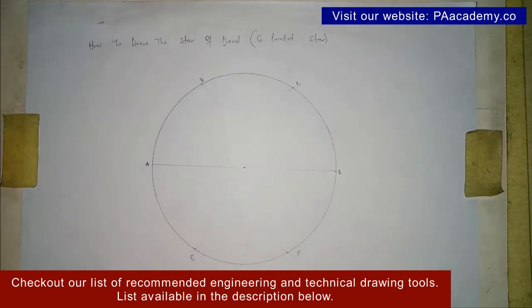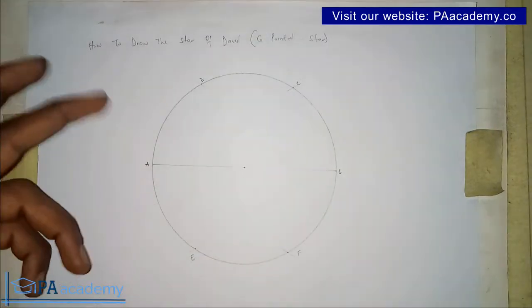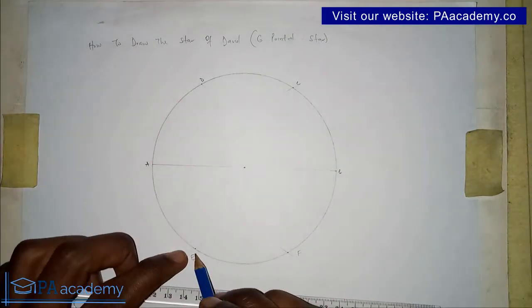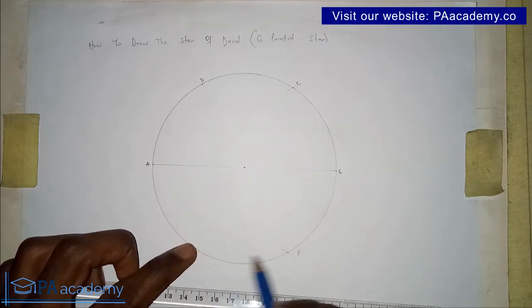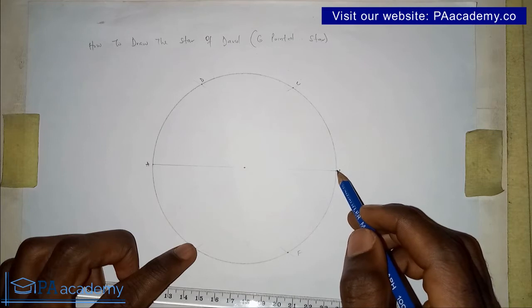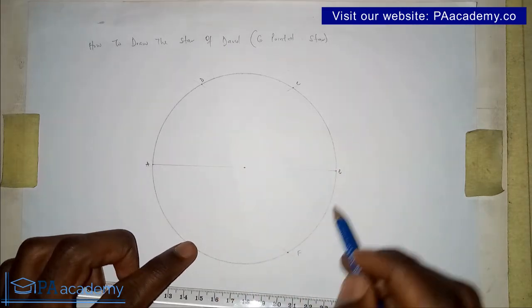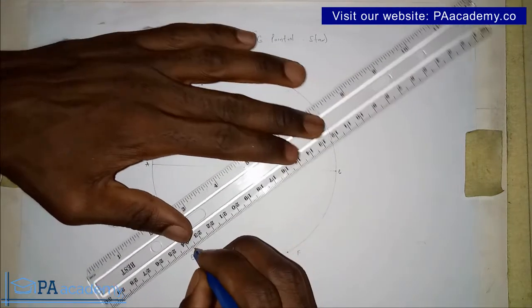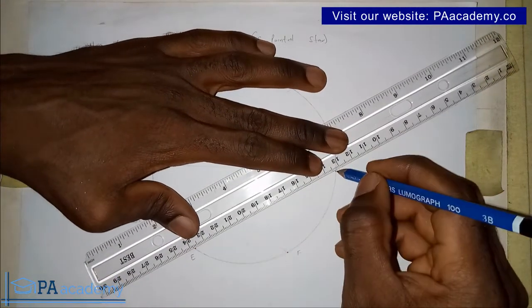The next thing you have to do is, from any point, you can start from any of the points, from A, B, C, D, E, or F, from anyone. But let me just start from point E. From point E, you are going to draw a line. From point E, you are going to skip the next point and draw a line to the one that follows, that is B. So you skip one and draw a line to the next one. This is what I'm talking about. From point E, you draw a line straight to point B.